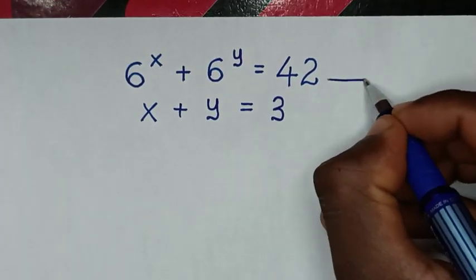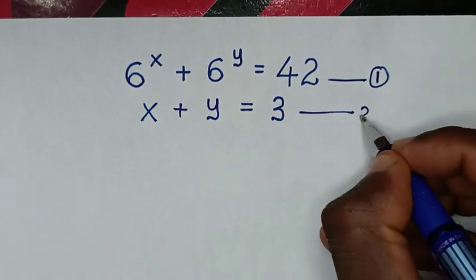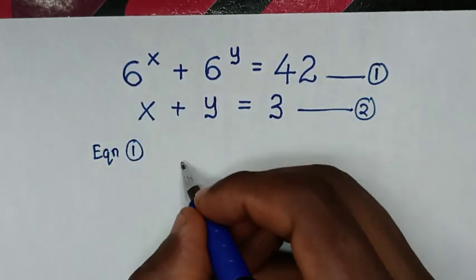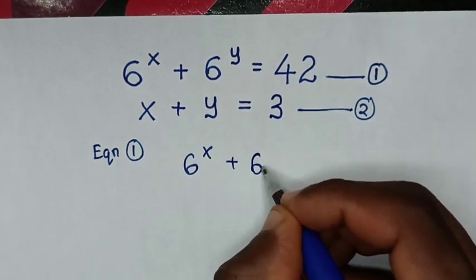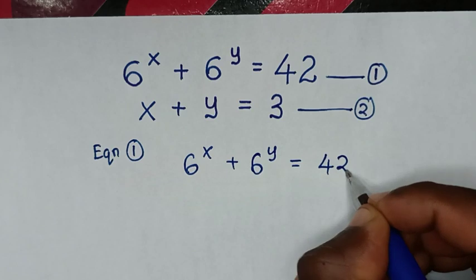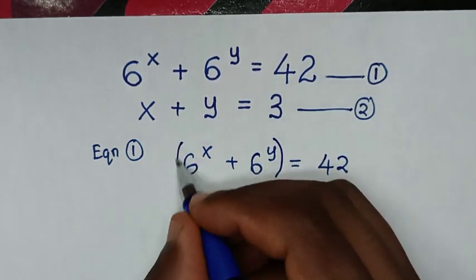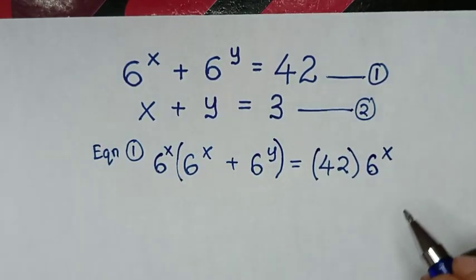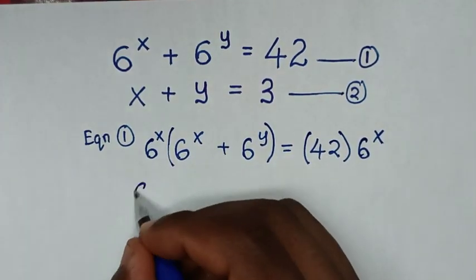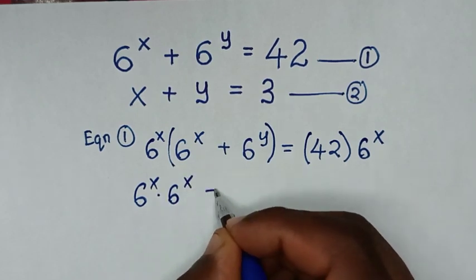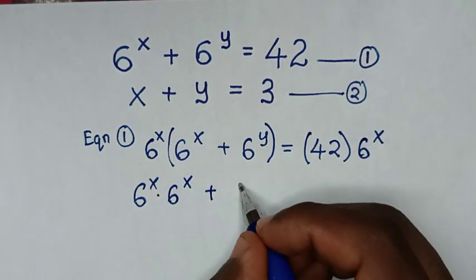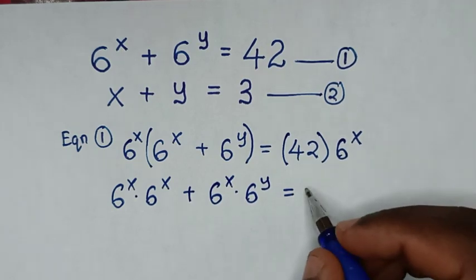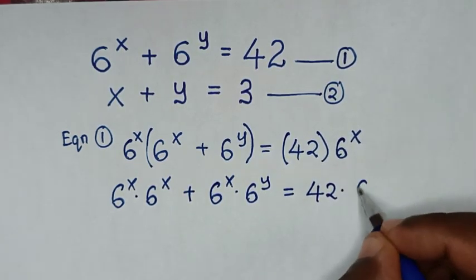We let this equation 1 and this equation 2. From equation 1, which is 6 power x plus 6 power y is equal to 42, we multiply the whole equation by 6 power x. Then it will be 6 power x times 6 power x plus 6 power x times 6 power y is equal to 42 times 6 power x.